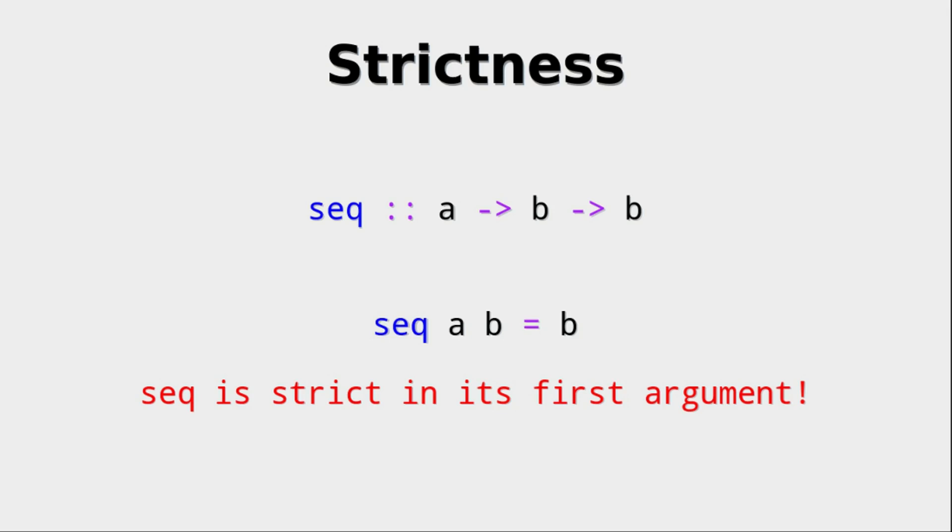And it is the only function within Haskell that has this property. This is not defined in the source code. This is actually defined in the compiler, that seq is strict in its first argument a. So this function can be used in order to force strictness.